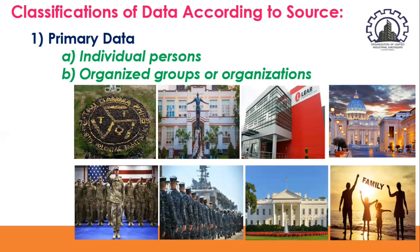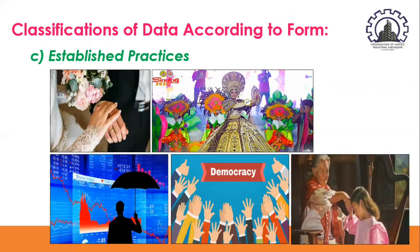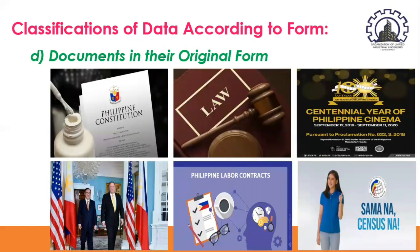Another primary data example would be established practices, such as marriage, religious rights, the legal system, economic system, democracy, and the system of morals. Under primary data, we also have documents in their original forms — the constitution, laws, orders, proclamations, treaties, contracts, census, and all kinds of original records, letters, diaries, etc.